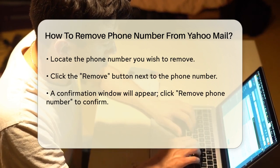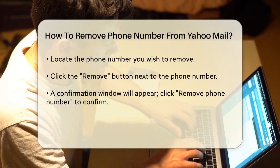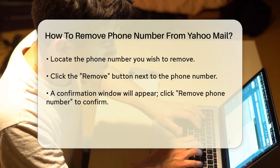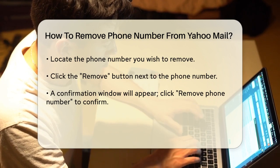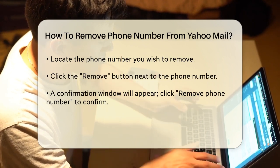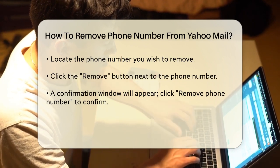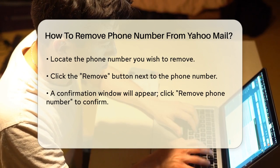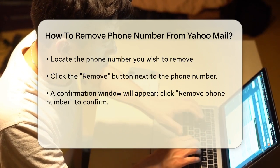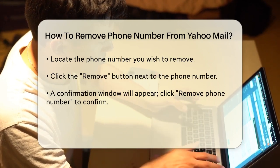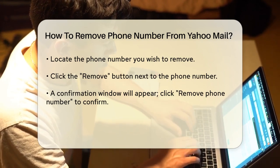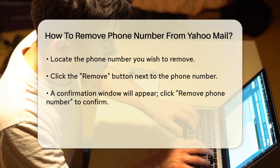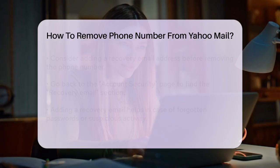Look for the phone number you want to remove and click on the Remove button next to it. A confirmation window will pop up asking if you're sure you want to remove the phone number. Click Remove Phone Number to confirm. This will delete the phone number from your Yahoo account.